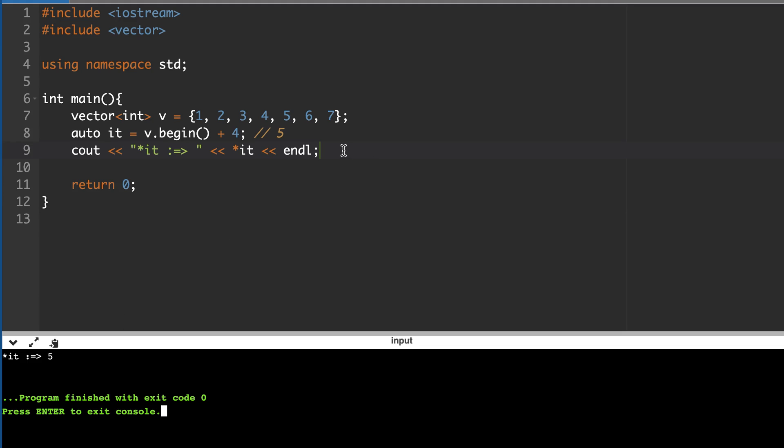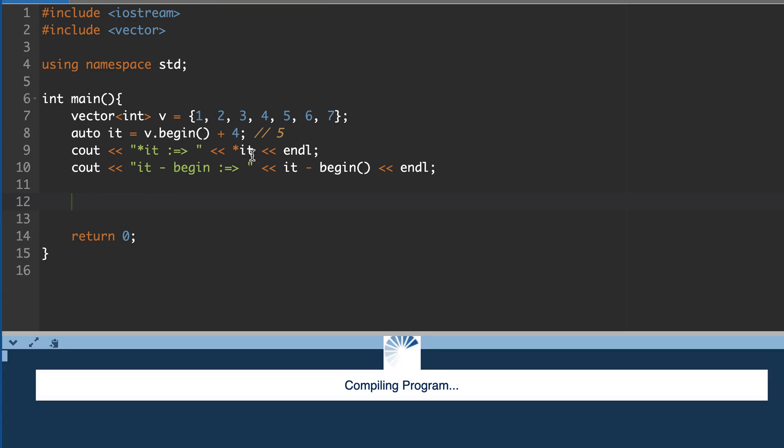Also, if you print the difference from or offset from begin, then it should print 4, because it is pointing here and begin is pointing here, so difference is 4. There should not be anything surprising here.